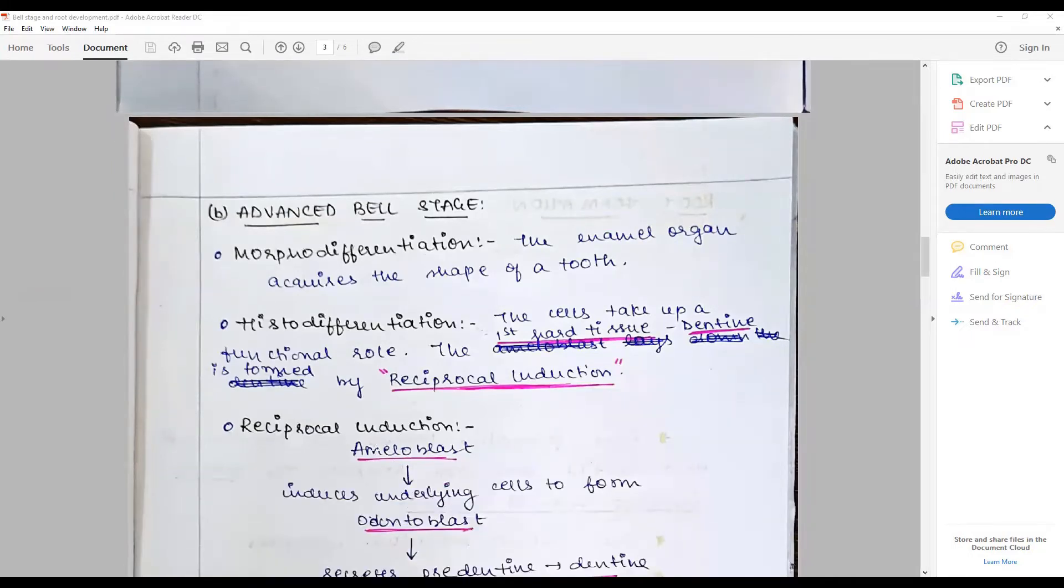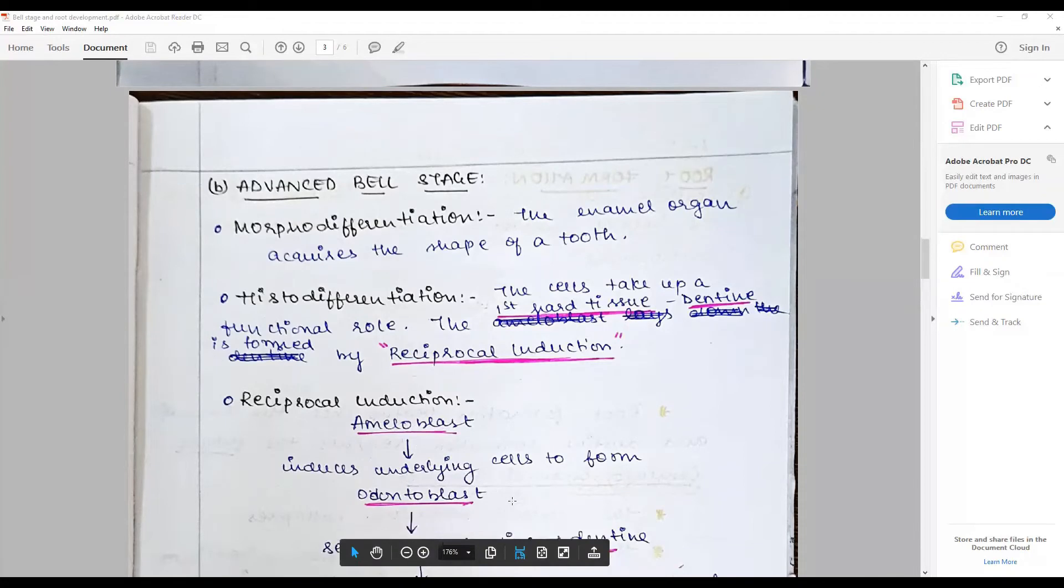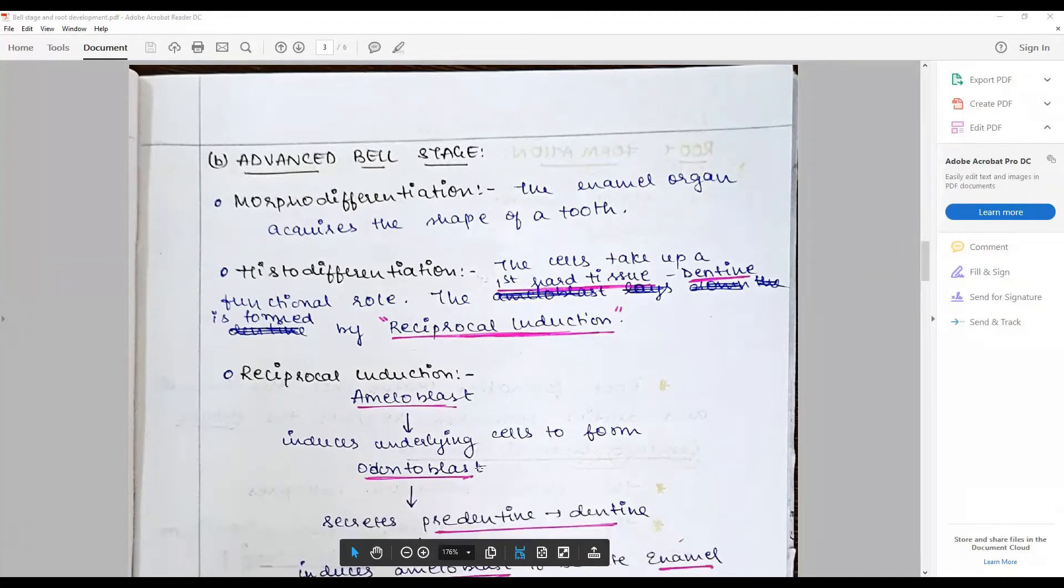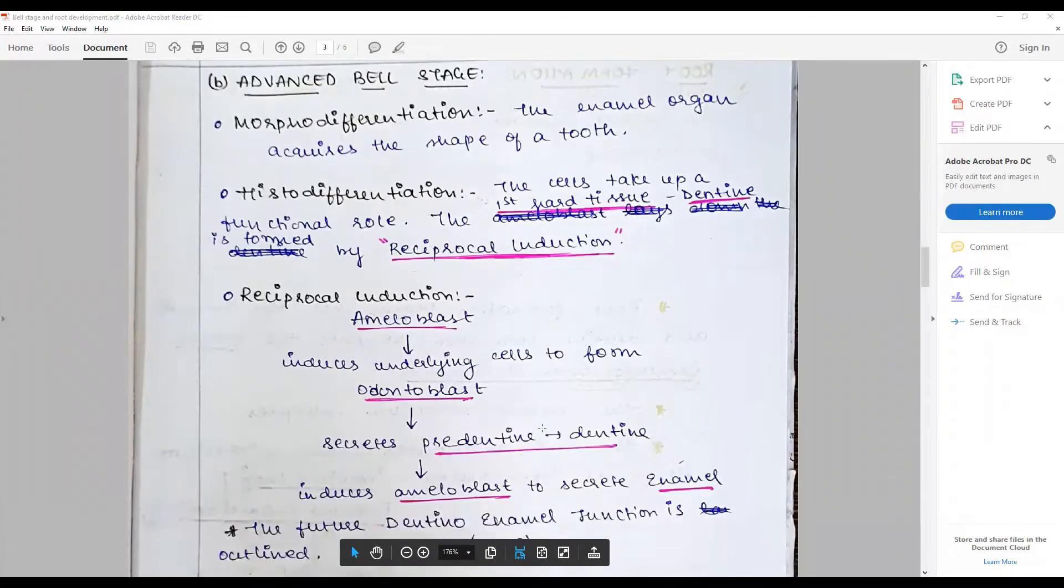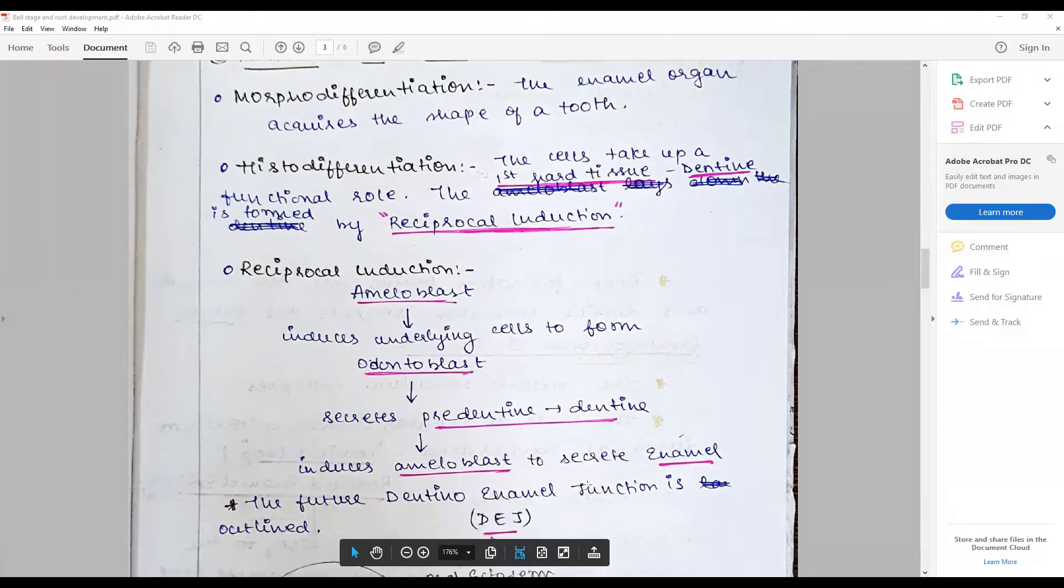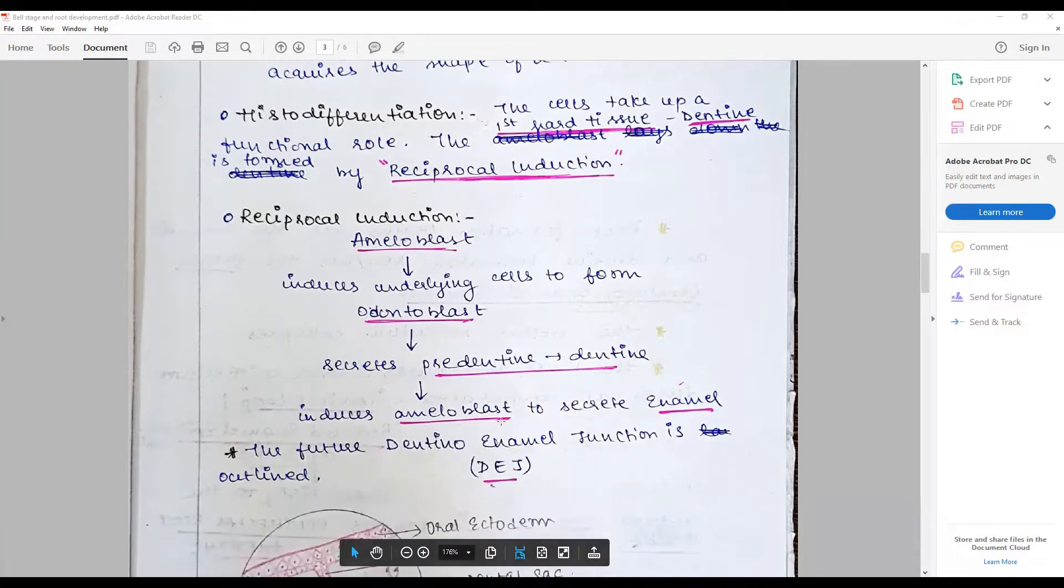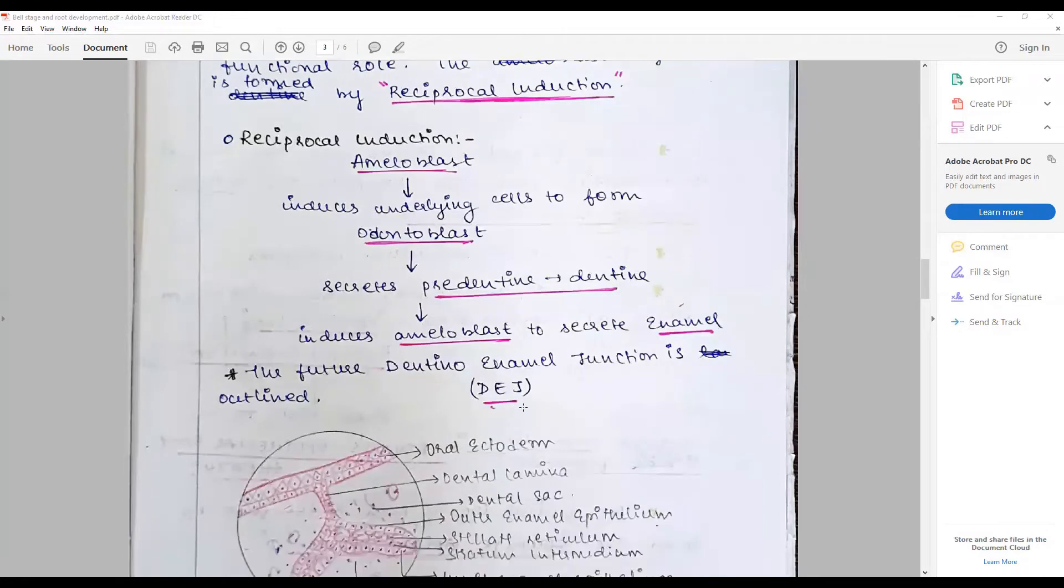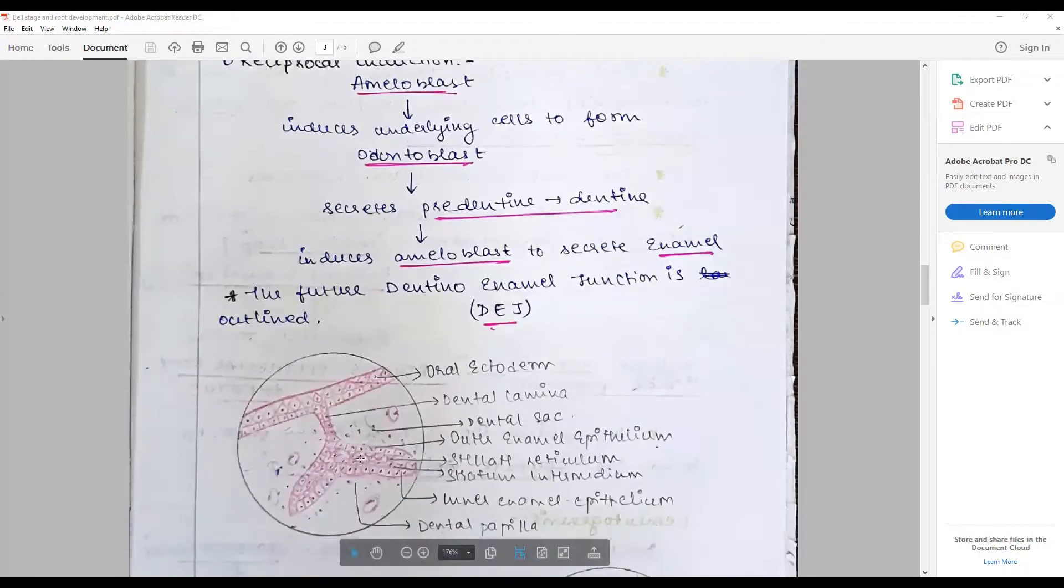The candidate here has made a small mistake - she has put it as ameloblast; it should be inner enamel epithelium. The organizing influence induces the underlying cells to differentiate into odontoblasts, dental papillary cells to form odontoblasts that secrete predentin to dentin. And this in turn acts on the inner enamel epithelium to turn into ameloblasts to secrete enamel. This future area where the inner enamel epithelium, or later ameloblasts, interact with odontoblasts forms the future dentinoenamel junction. Give how the shape of the early bell stage looks like.